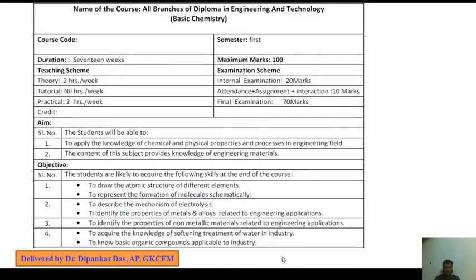Moving to the next slide: the course name is Basic Chemistry. Duration is 17 weeks. Maximum marks 100. Teaching Scheme: Theory 2 hours per week, Internal Examination 20 marks, Tutorial 9 hours per week, Practical 2 hours per week, Final Examination 70 marks. Attendance plus Assignment plus Interactions contribute 10 marks. So this is the marks distribution — 70 marks for the Final Exam.